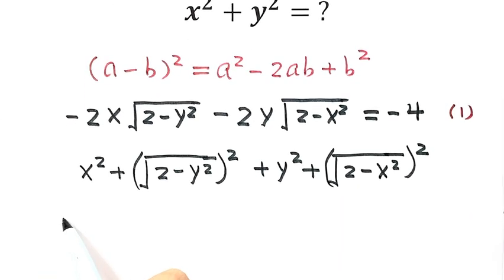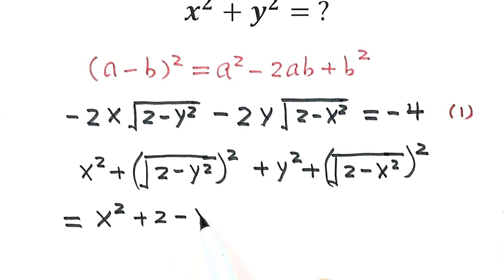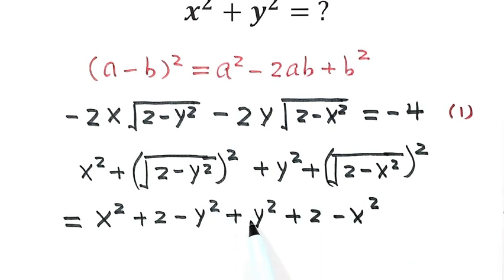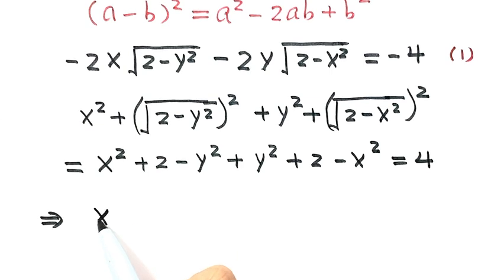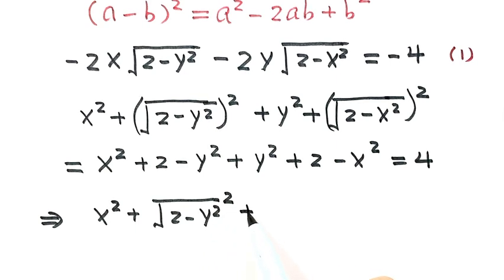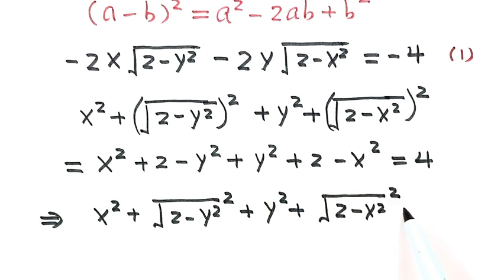Now let's simplify. We have x squared times (2 minus y squared), then y squared times (2 minus x squared). These two terms cancel each other, leaving 2 plus 2 which equals 4. So we have x squared plus (square root of (2 minus y squared)) squared plus y squared plus (square root of (2 minus x squared)) squared equals 4. We label this as equation 2.